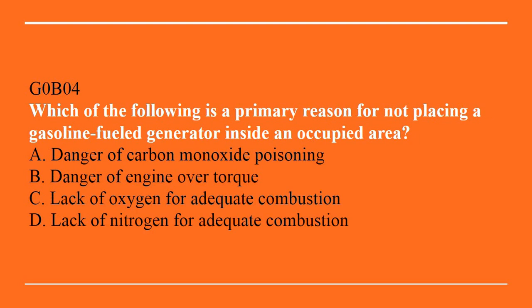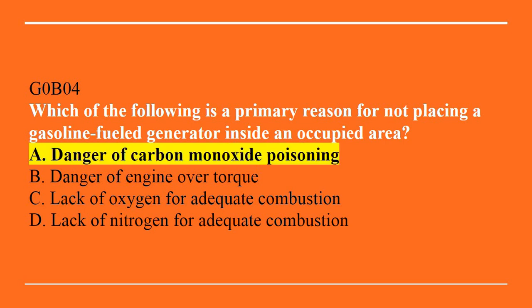G0B04: Which of the following is a primary reason for not placing a gasoline fuel generator inside an occupied area? A, danger of carbon monoxide poisoning. B, danger of engine over torque. C, lack of oxygen for adequate combustion. Or D, lack of nitrogen for adequate combustion. The correct answer is A — danger of carbon monoxide poisoning.